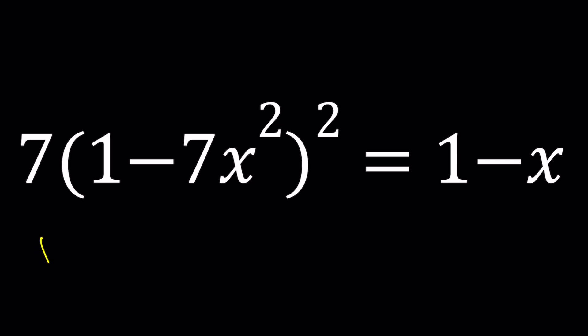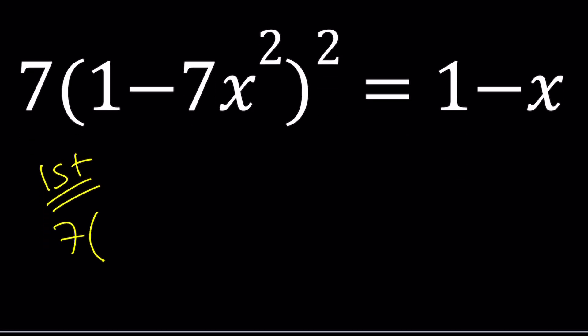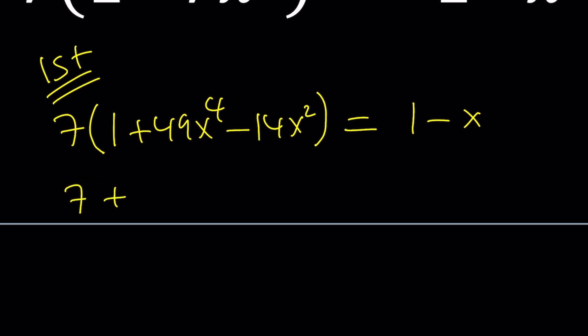Let's start with the first method. So for my first method I'm going to go ahead and square 1 minus 7x squared. That's going to give me a squared plus b squared minus 2ab which is 14x squared. And then let's go ahead and distribute the 7. 7 plus 343x to the fourth power which is by the way 7 cubed minus 98x squared equals 1 minus x.